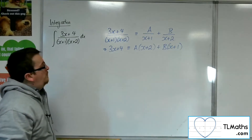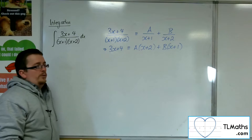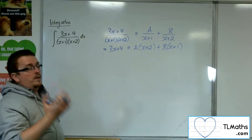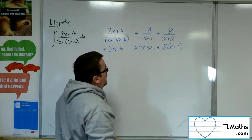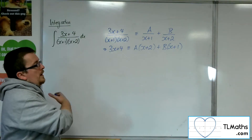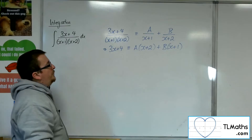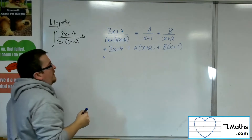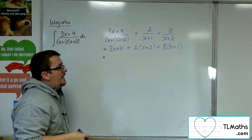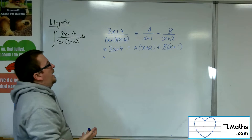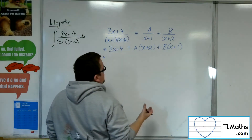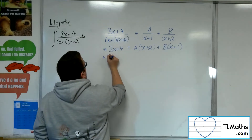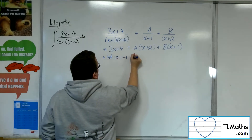If you've never seen partial fractions before, this will be a mystery to you. I would recommend you go back and watch the partial fractions videos from a little way back in the course. Because of that equivalence, I can let x be any real value I like to eliminate these brackets and figure out A and B. I would first of all let x be minus 1.